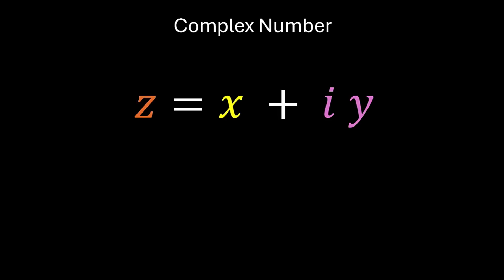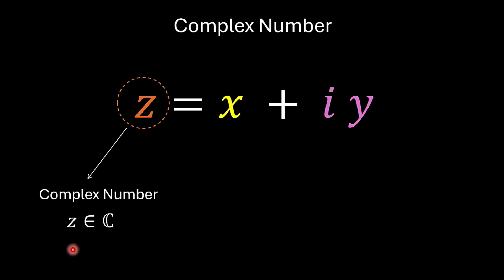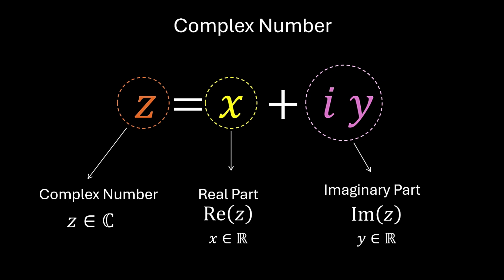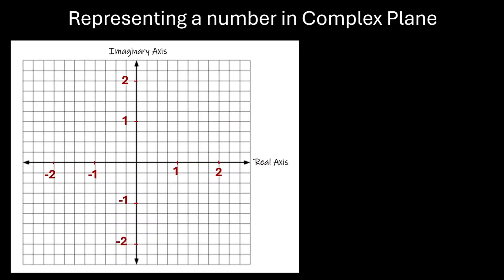Now that we have a new type of number called an imaginary number, combining it with a real number gives a complex number. So z = x + iota·y (where iota = √(−1)) is a complex number. z is an element of the set ℂ, the set of complex numbers. x is a real number called the real part of z, and iota·y is the imaginary part, where y is a real number.